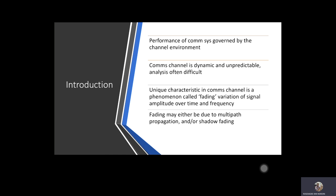Fading occurs due to different kinds of effects. One is known as multipath propagation, and the simplest one is known as path loss. If the radio signal encounters an obstruction, it will experience shadow fading. If the signal encounters relative motion due to speed, you will encounter what we call Doppler fading.